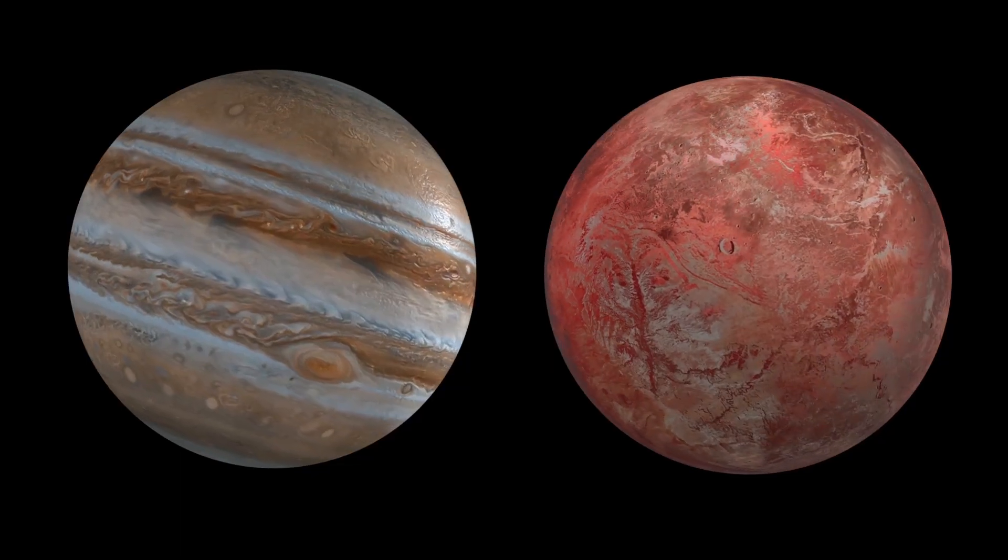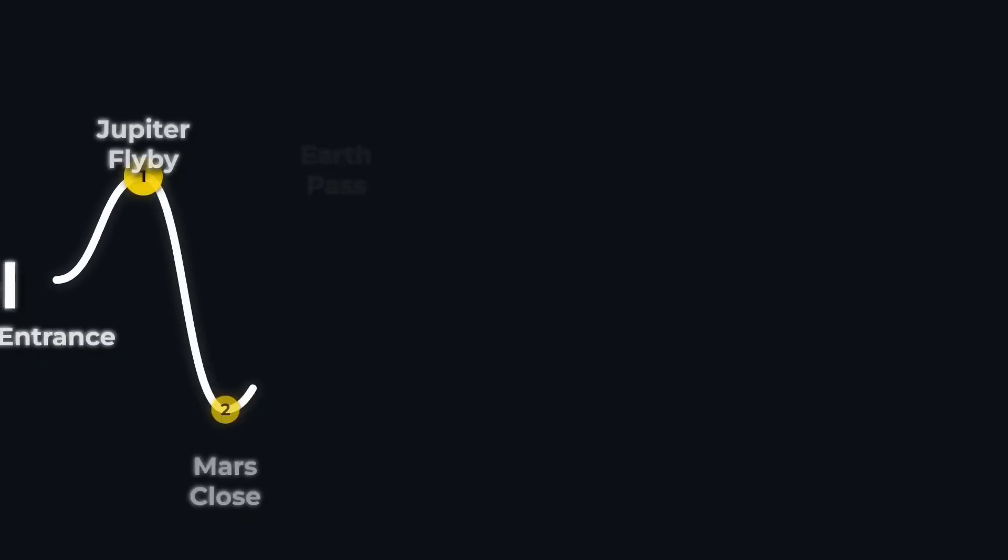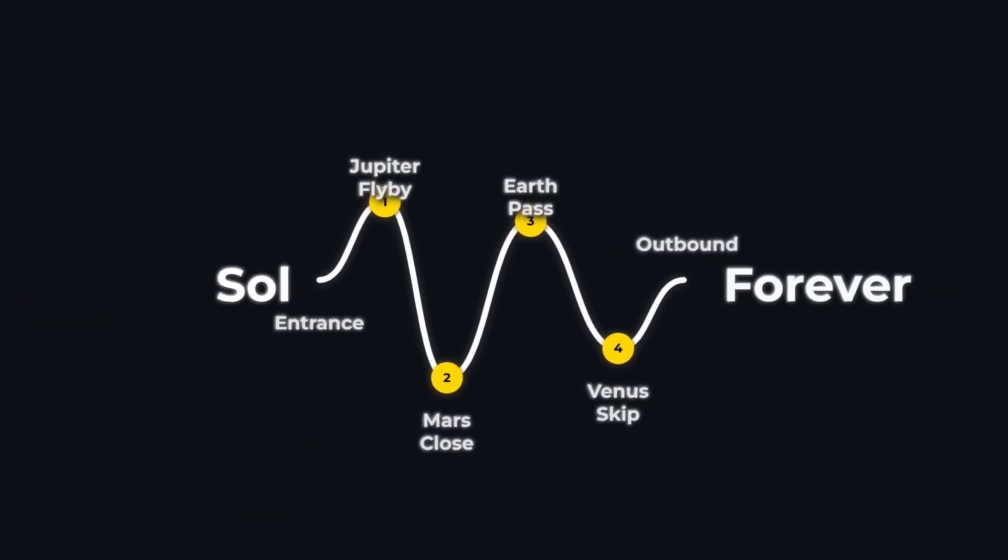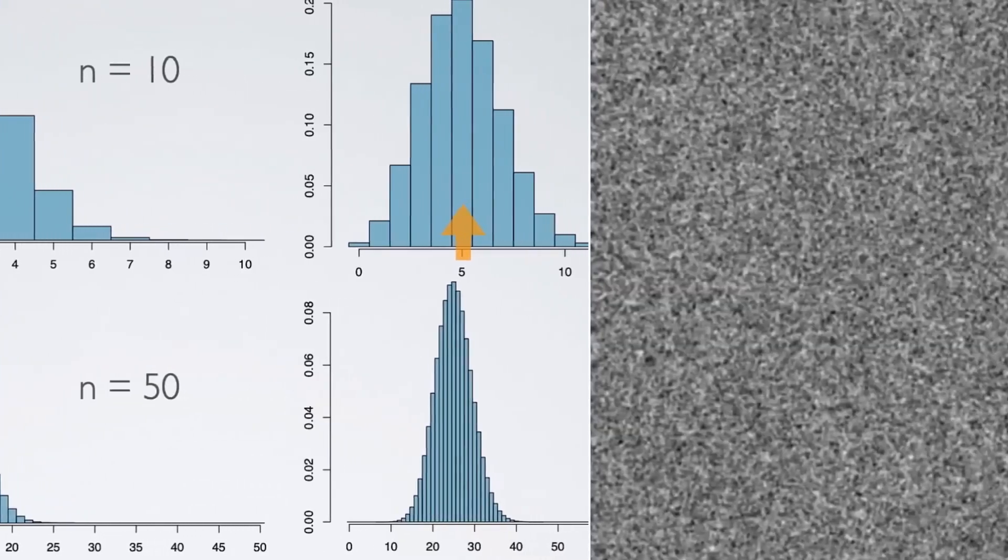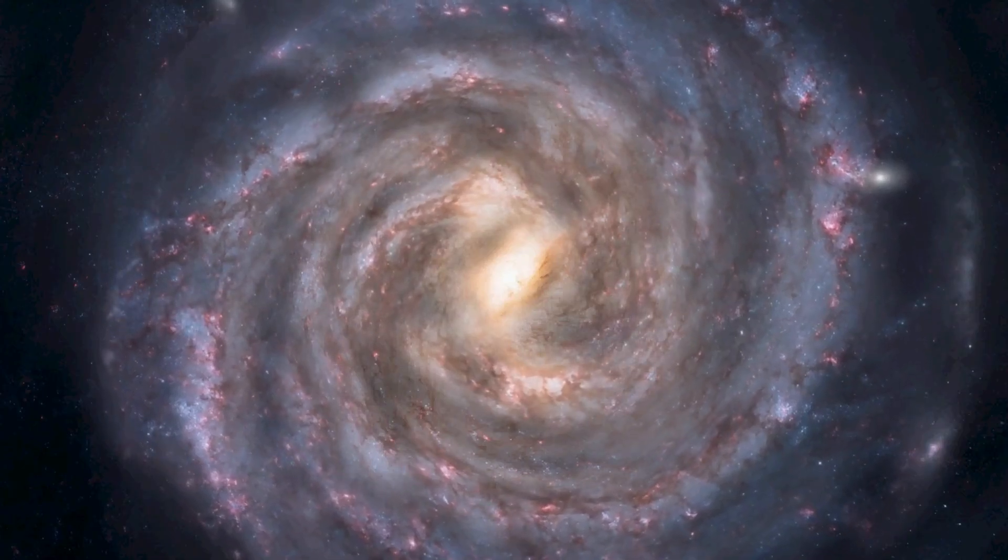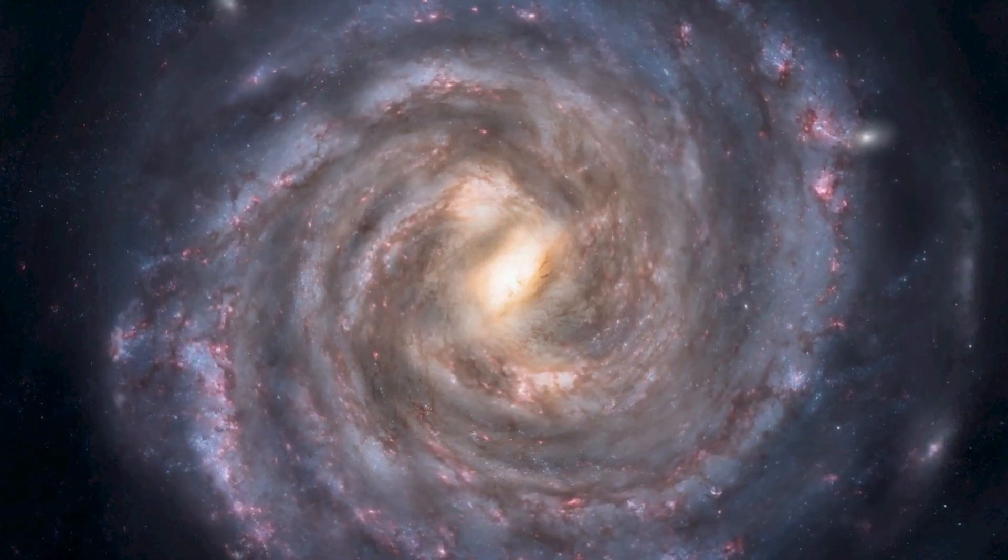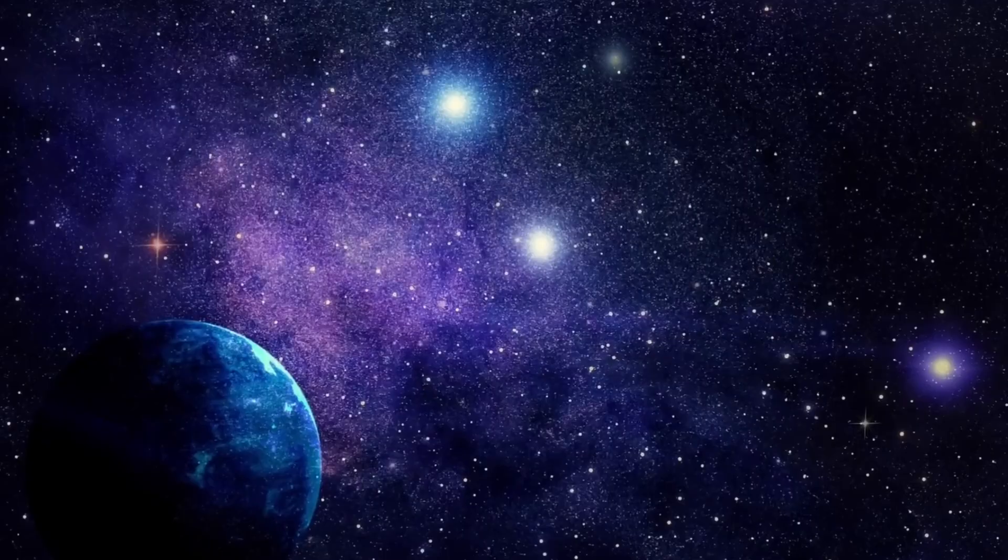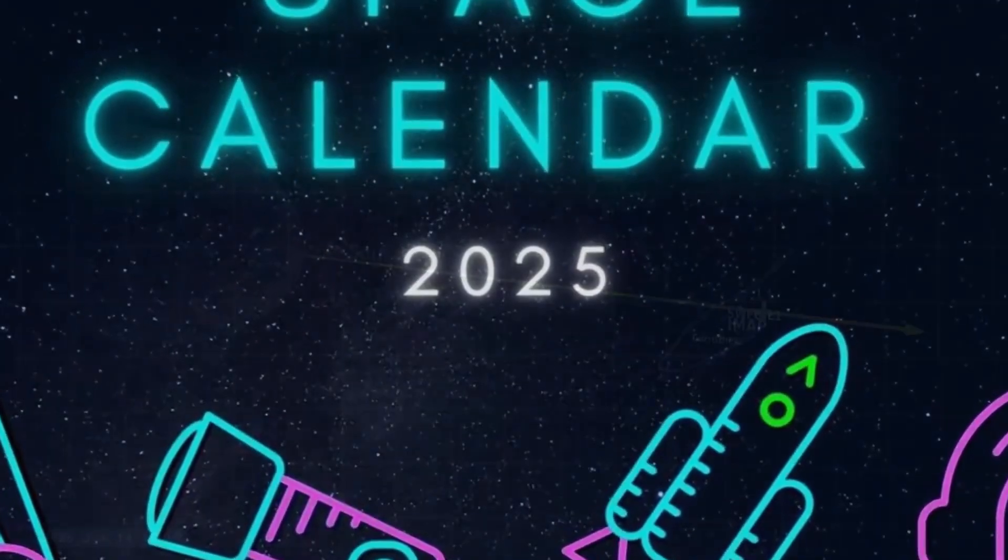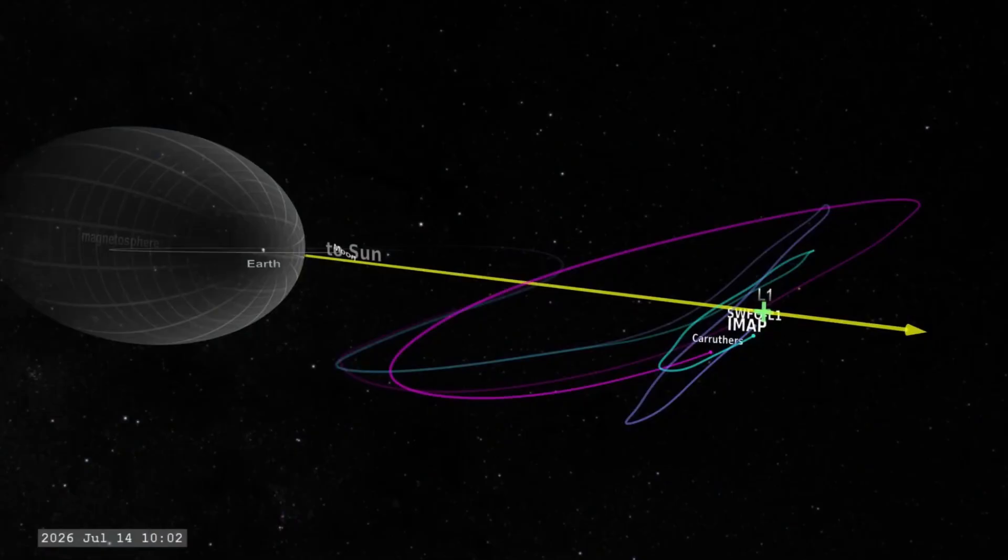This sequence is not random. The object's hyperbolic path threads a narrow corridor through the inner solar system, grazing the gravitational spheres of four planets in succession. The odds of such a grand tour happening by chance, according to simulation studies, are less than 0.005%—a figure so vanishingly small it has fueled both intense scientific curiosity and rampant public speculation.